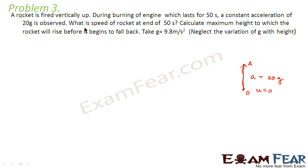The question asks what is the speed of the rocket at the end of 50 seconds? That means the question asks what would be the speed at this point. So let us try to calculate the same for the first part. We are given time is equal to 50 seconds. We are given acceleration is equal to 20g and we know that initial velocity u is equal to 0.